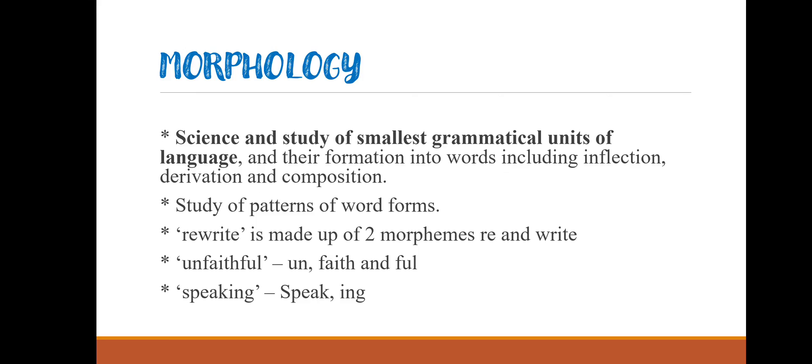The next one is morphology. Morphology is the science and study of the smallest grammatical units of language and their formation into words, including inflection, derivation, and composition. Broadly speaking, morphology is a study of patterns of word forms — it studies how words are formed, where they originate, their grammatical forms, and the functions of prefixes and suffixes. For example, the word 'rewrite' has two morphemes: 're' and 'write'. The word 'unfaithful' has three morphemes: 'un', 'faith', and 'ful'.